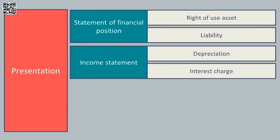For example, the right of use asset could just appear as part of property, plant and equipment, and the lease liability could just appear as part of liabilities. If you don't actually split them out on the face of the balance sheet, then you must provide the split in the notes to the financial statements. So essentially the standard allows you either disaggregation on the face of the accounts or disaggregation in the notes to the accounts.